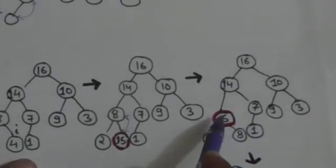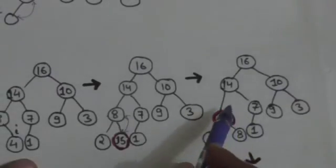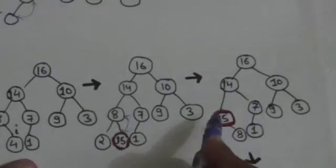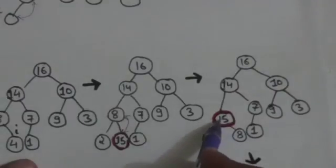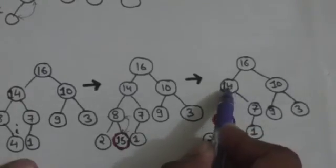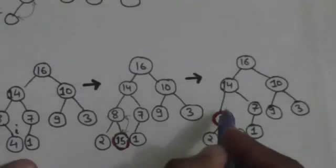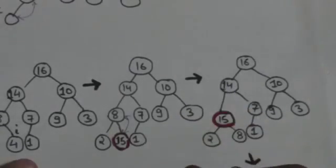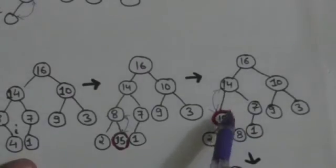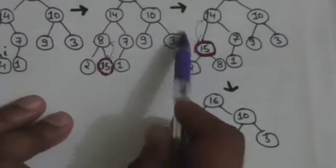Now this node has got a new value, so we will compare it with its parent because it may be larger than its parent, and if it is larger than its parent then the max heap property is violated. Here the value of the parent is 40, which is less than the value of this node. So the max heap property is violated, and we will exchange this node with its parent.